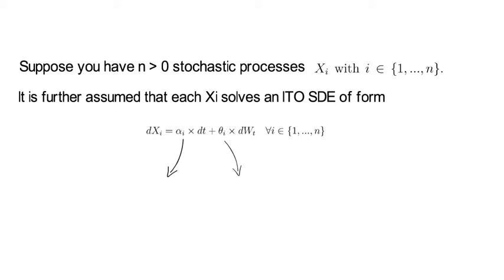With αi and θi being potentially stochastic Ito processes themselves.